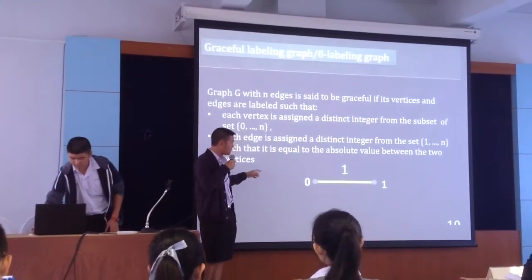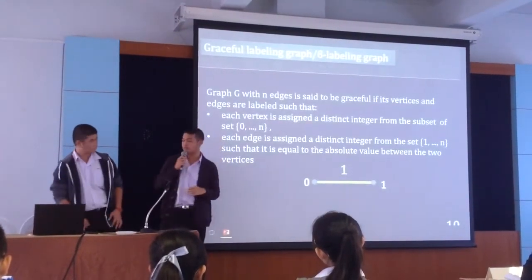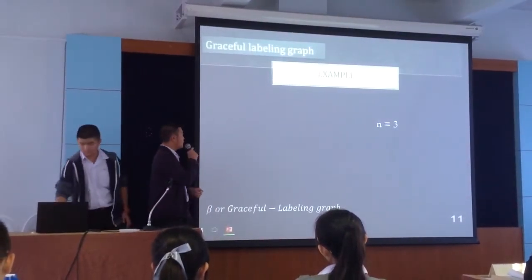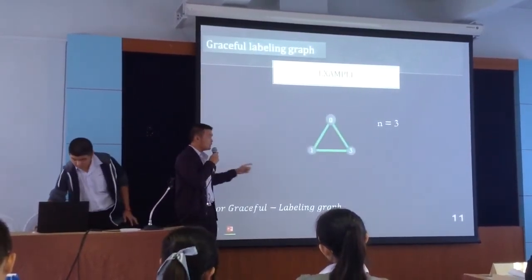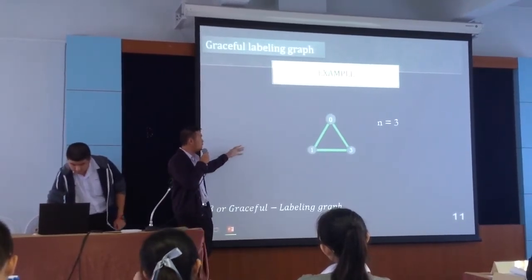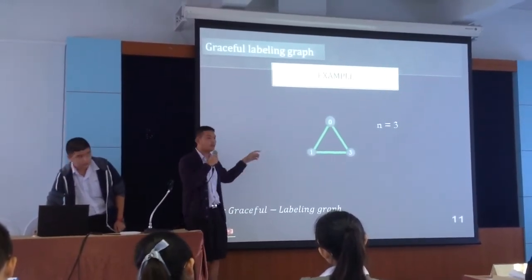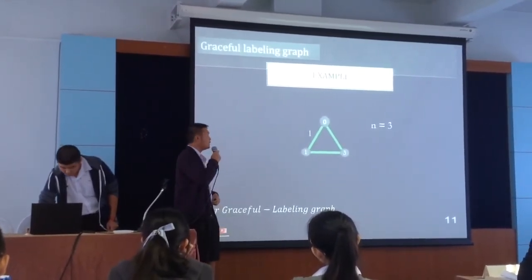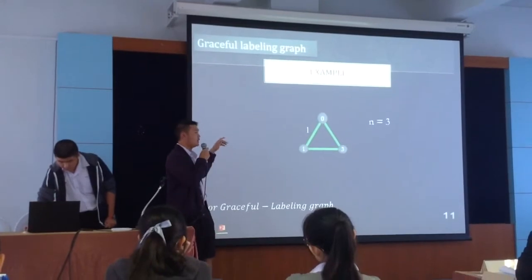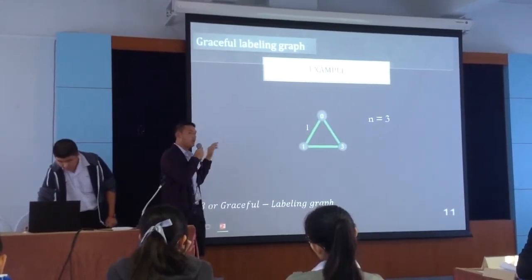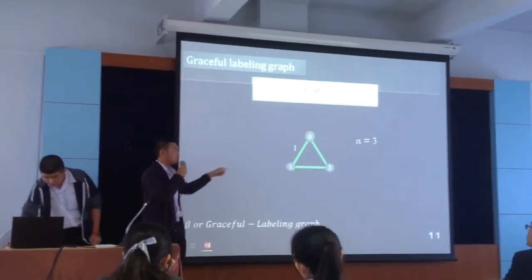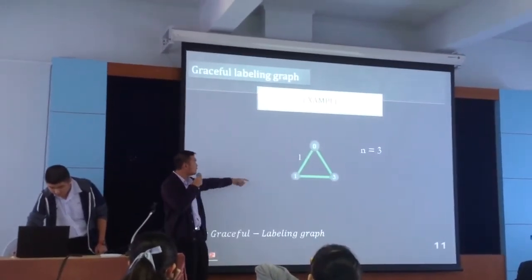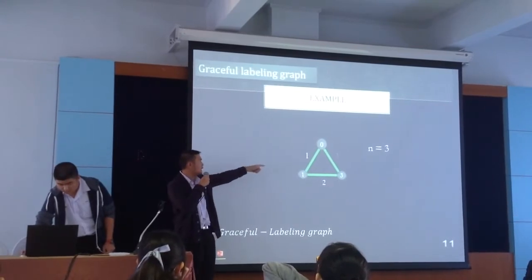Like this example: if we have a graph with T, that will make n equal to 3. And if we assign value of vertex as 0, 1, and 3, we will get value of edges as 1, 2, and 3.